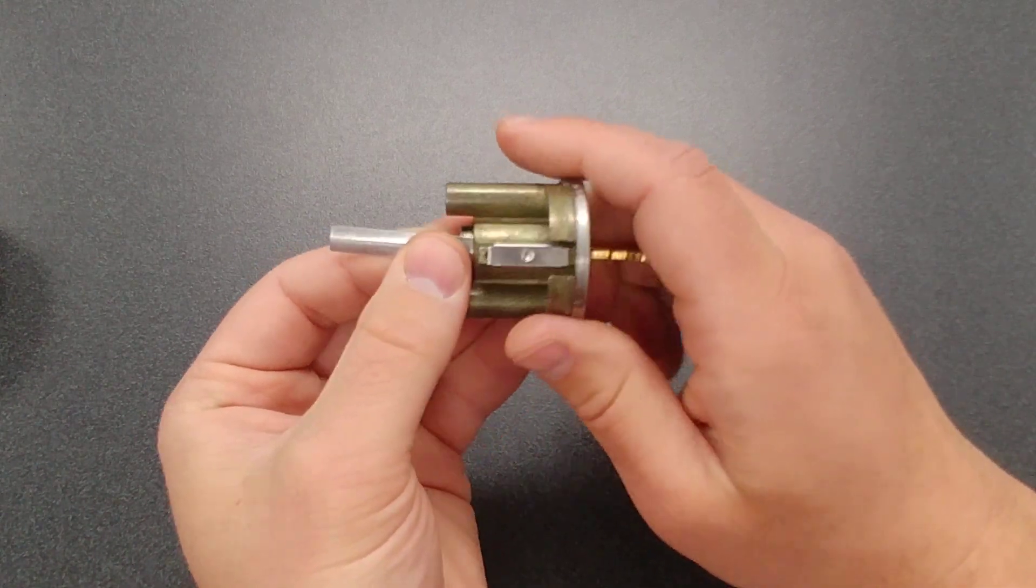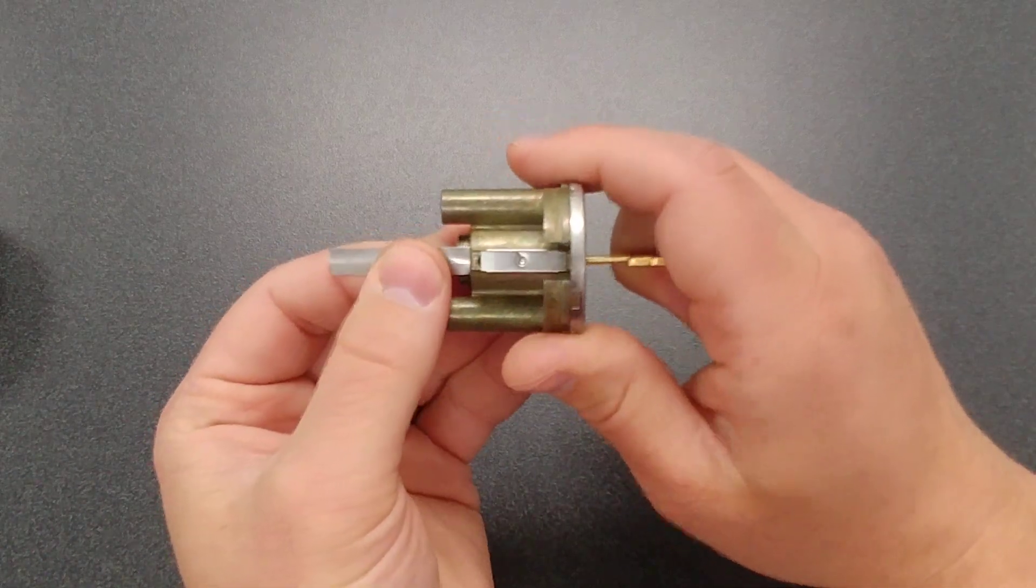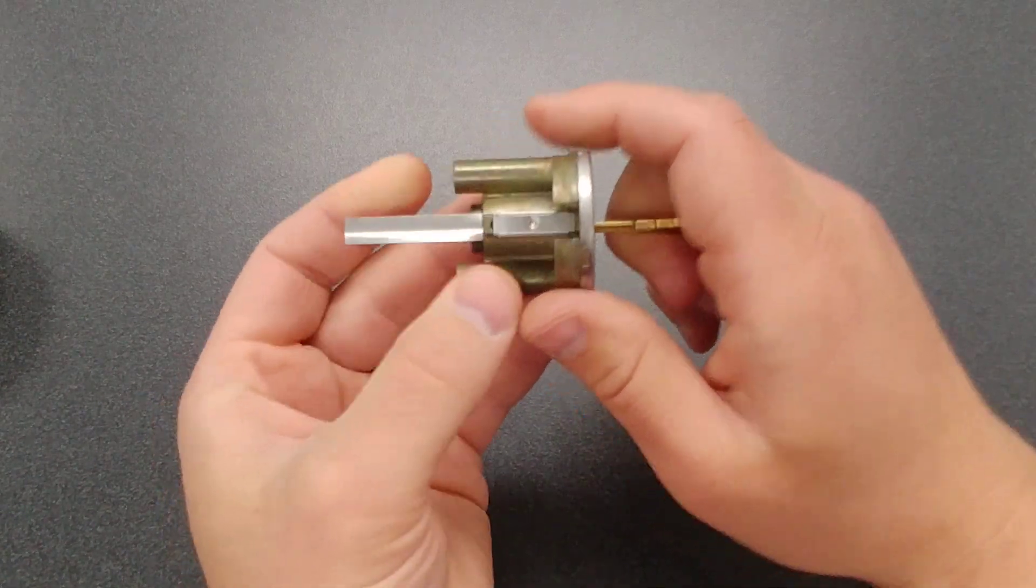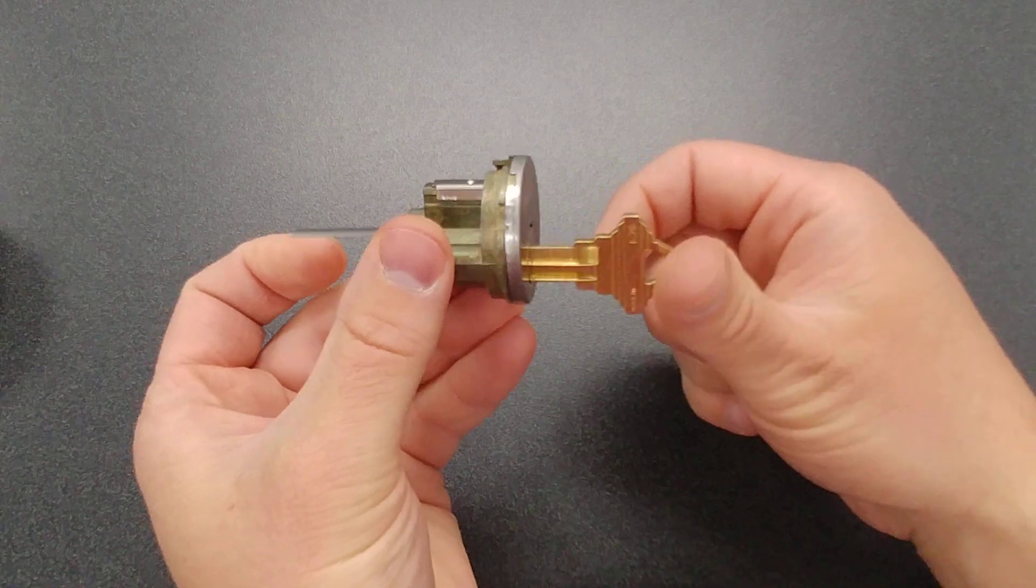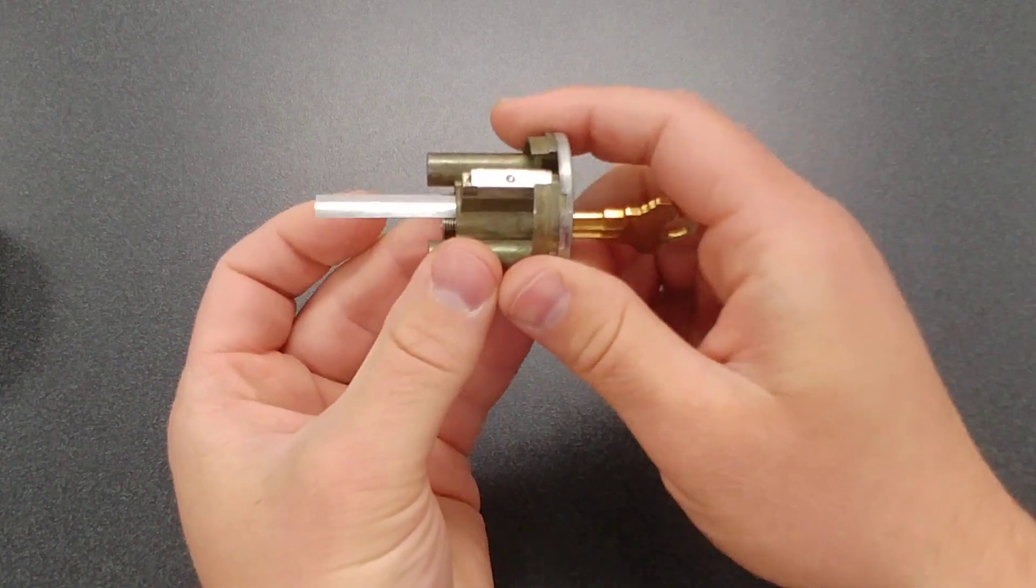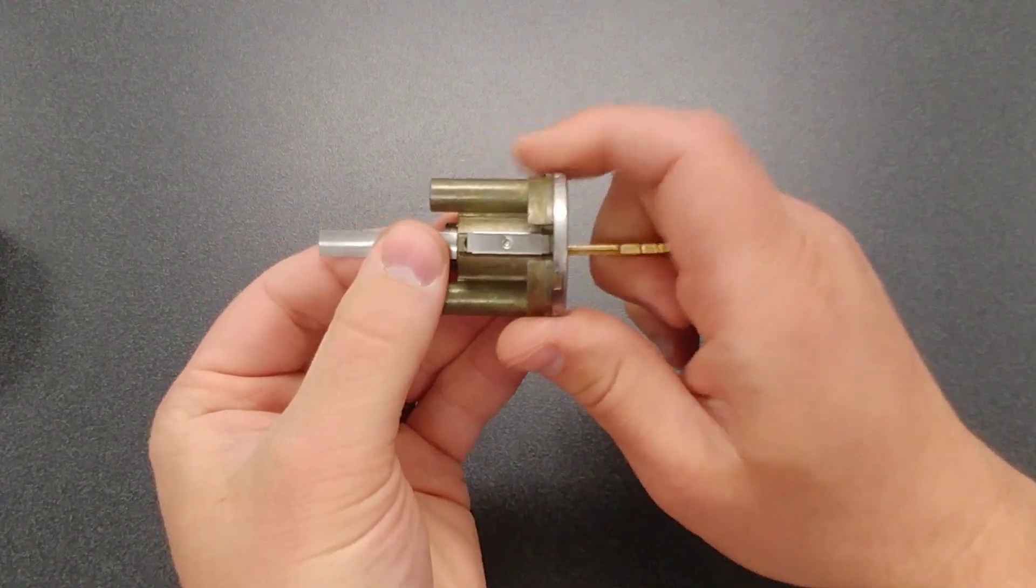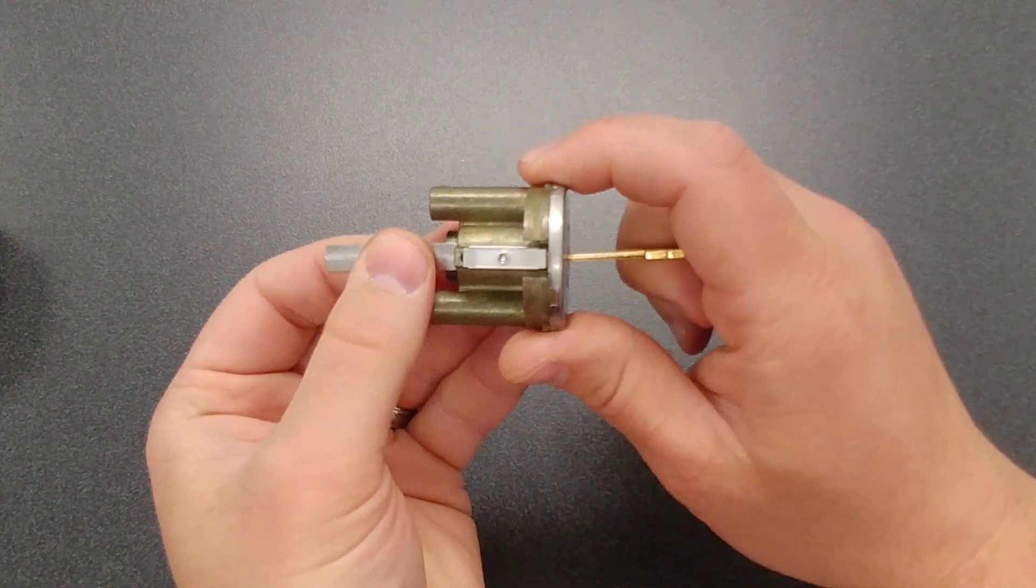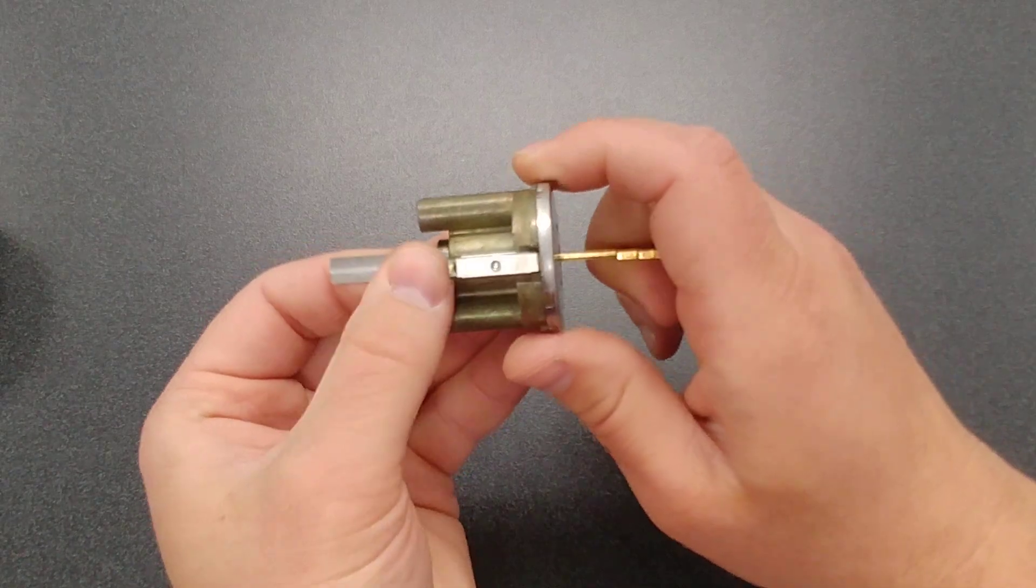We're just going to start sliding this key back and forth while keeping a little pressure on here, as you can see. So right now the key is only going to go in this far because we've already shimmed a couple of the pins here. So I'm going to keep getting back on here. I'm going to hold it, keep moving it back and forth, some gentle, gentle pressure.